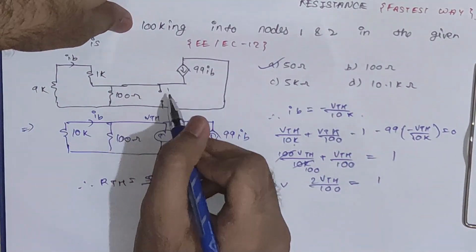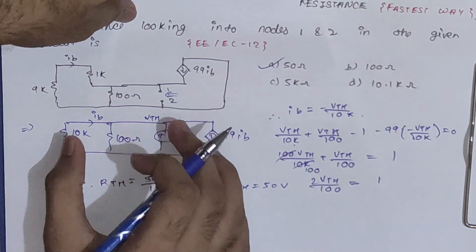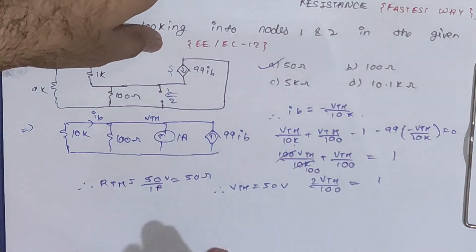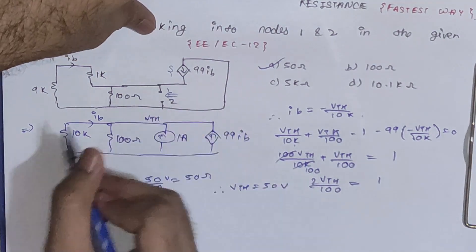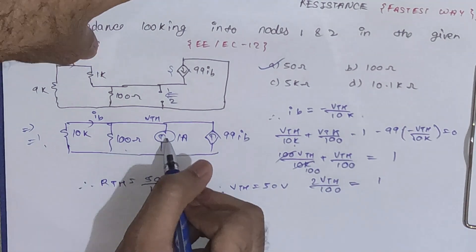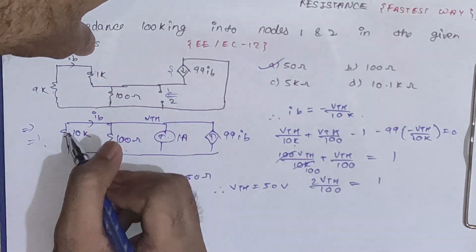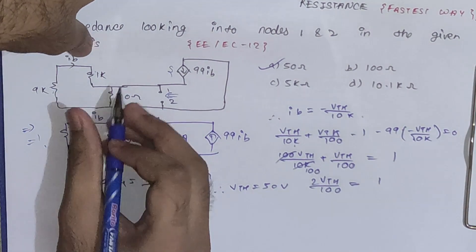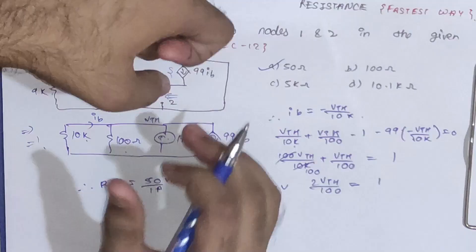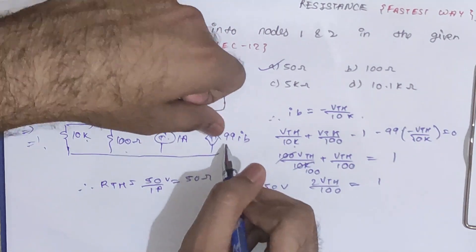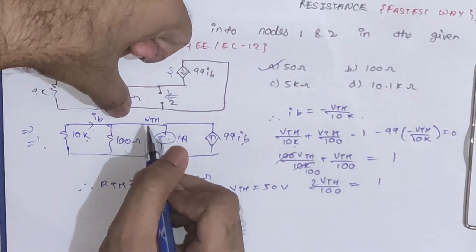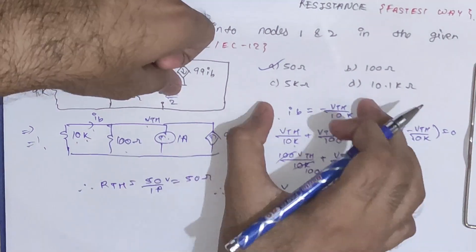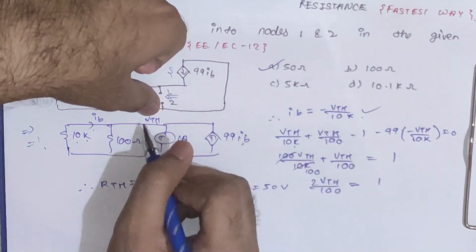Coming back to the first sum: find the equivalent resistance across points 1 and 2. We have no independent source, only one dependent source — so this is a condition 3 problem. We assume a 1 ampere current source between nodes 1 and 2. The two resistances are in series, replaced by 10k. Now we find Vts; the dependent source depends on Ib. First, find Ib = (0 − Vts) / 10k.